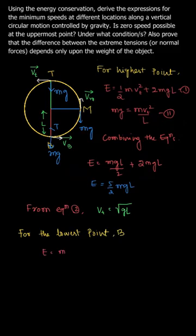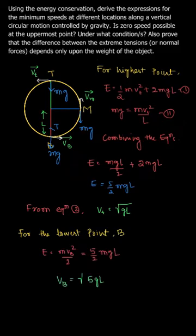Substituting this total energy value into the equation gives us the velocity at the topmost point as root over gl. So the minimum speed at the topmost point is √(gl).